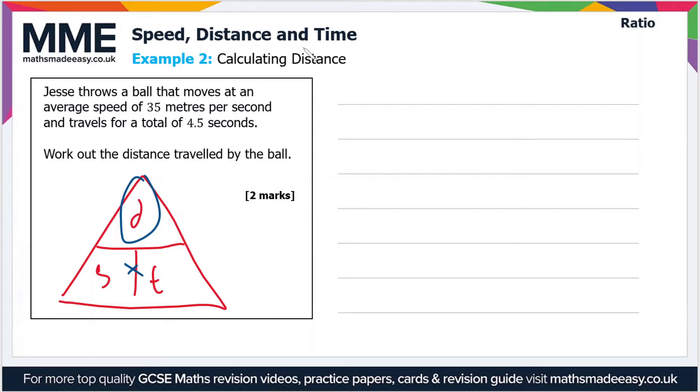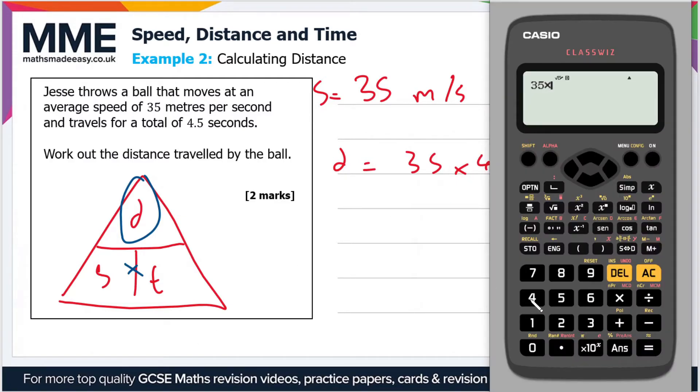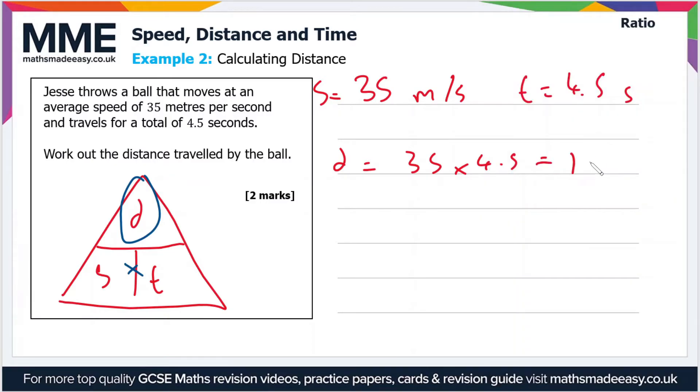So we have a speed of 35 meters per second, so that's S, and we have a time of 4.5 seconds. So the distance is just 35 times 4.5, so use our calculator, so that's equal to 157.5 meters. And it's meters because the units are meters per second and seconds.